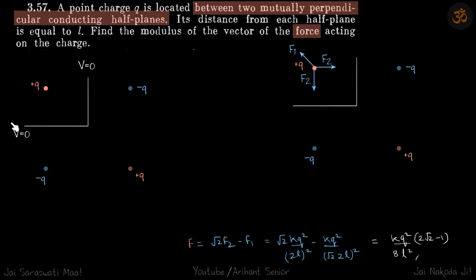The reason is this: if we take any point on this plane, the potential because of this charge and this charge is going to be zero at that point. But because of the other charge it will be minus kq/b — let's say this length is b — and that needs to be countered. It can be countered by placing a plus q charge here, making the potential of this point zero.